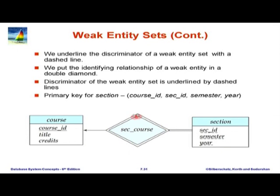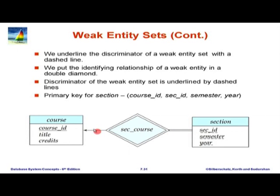The other notational thing is that we draw a double diamond to indicate that section is identified by course. The fact that section does not have an underline means it is a weak entity set — there is no primary key — and therefore it must be identified by some other entity set. The double diamond helps you understand which is the identifying strong entity set. Also note: a section must be identified with a course, hence a double line. A section can be associated with only one course, hence an arrow on that side.